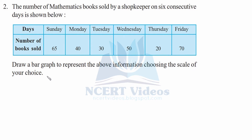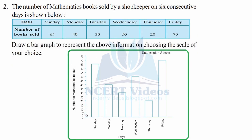You have the choice of scale. This is a vertical bar graph with number of mathematics books on the vertical axis and days of the week on the horizontal axis. You can choose one unit length equal to 5 books, because the numbers are not that high. So the scale goes 0, 5, 10, separated by 5 units, with each unit representing 5 books.